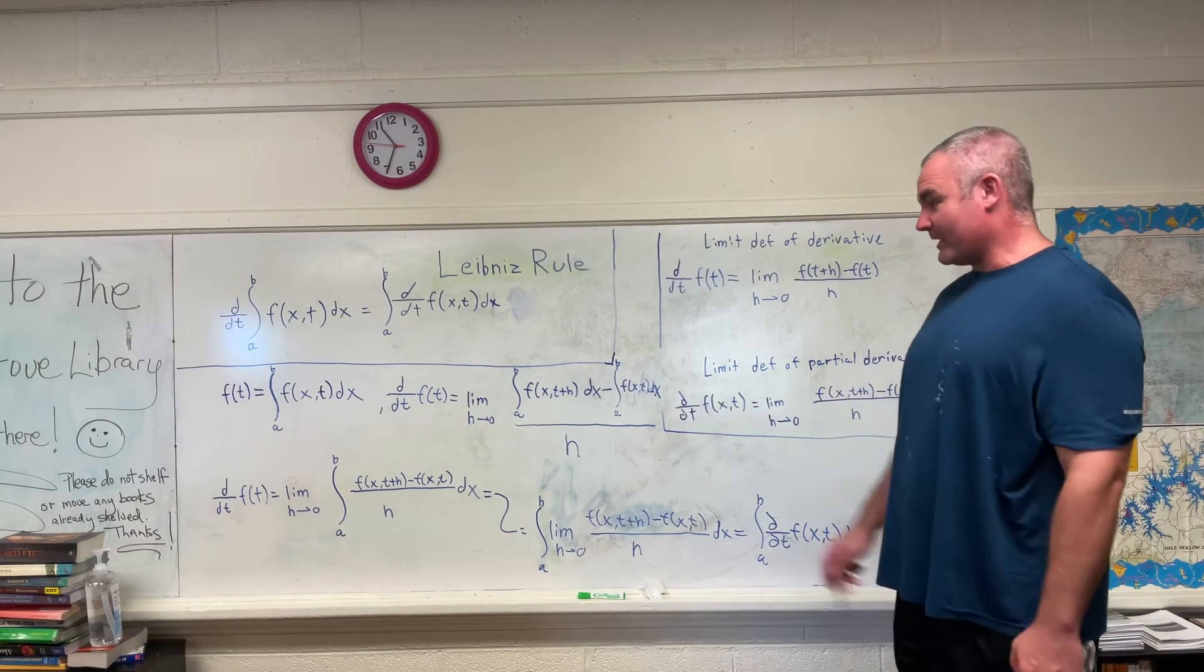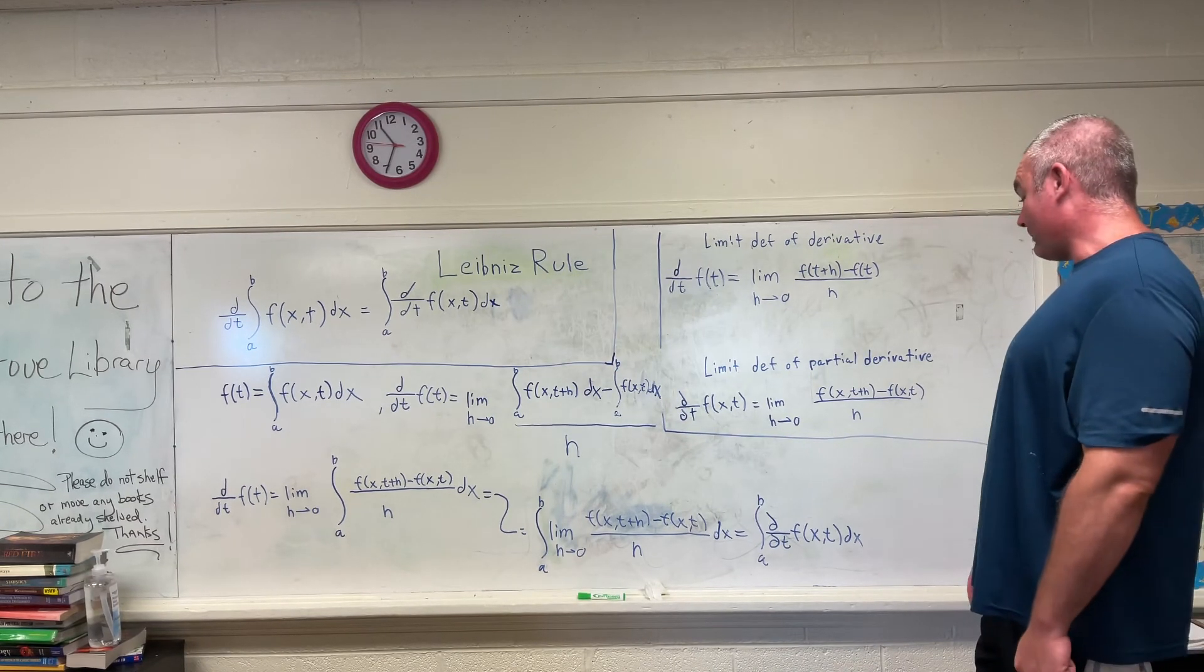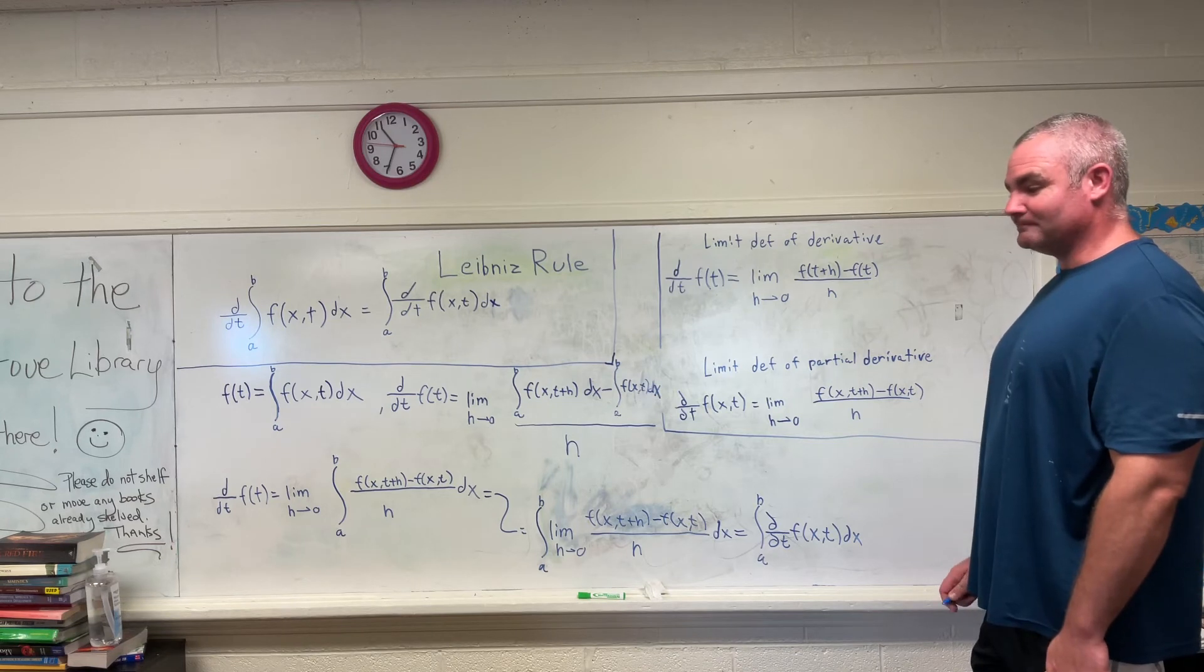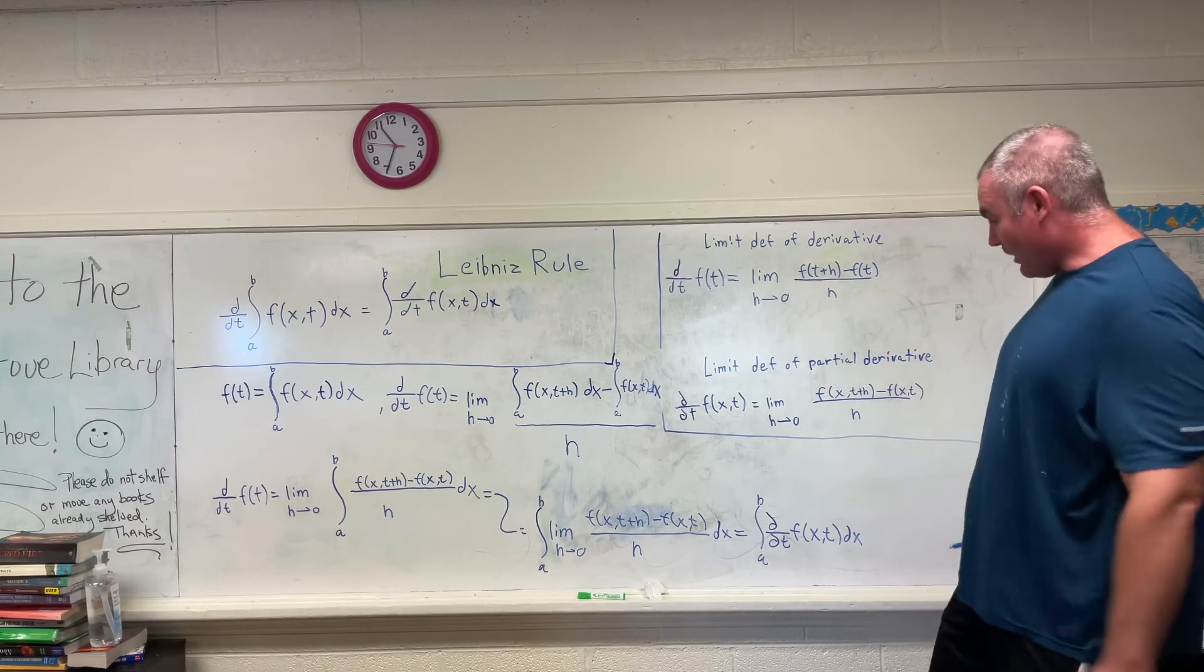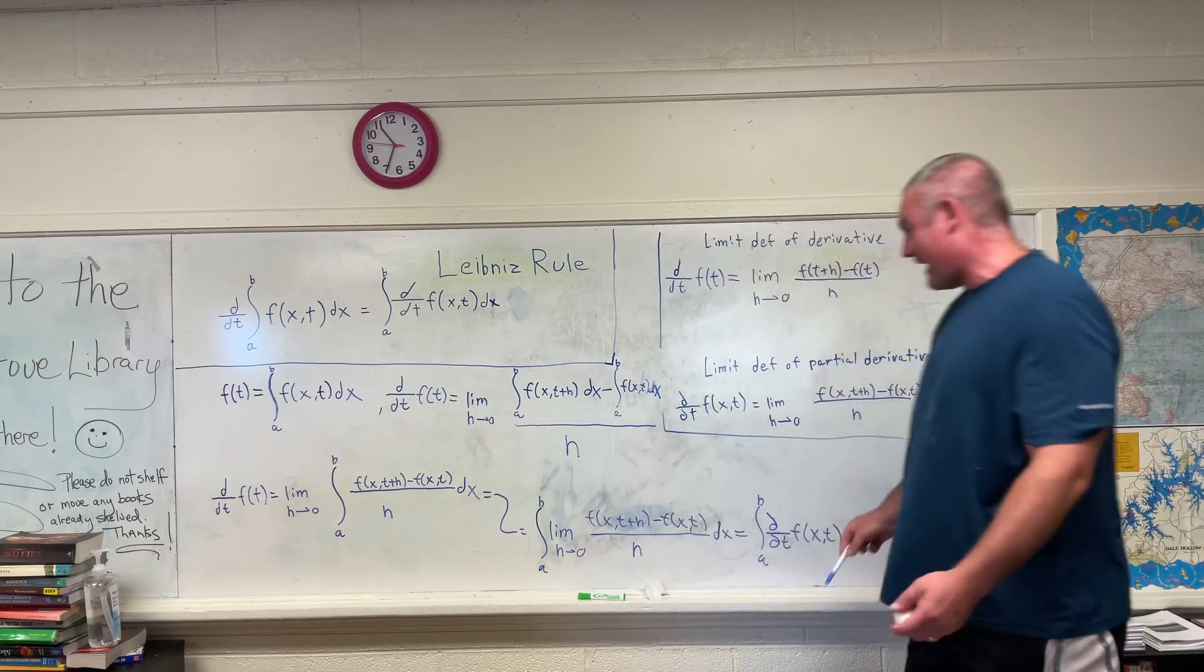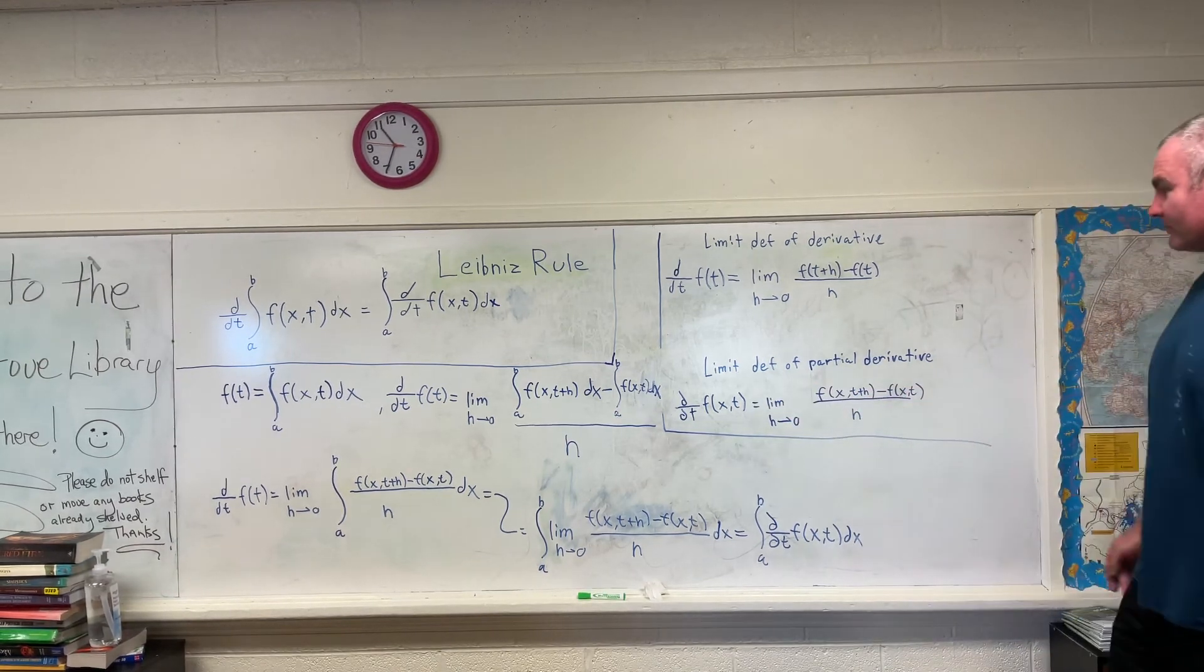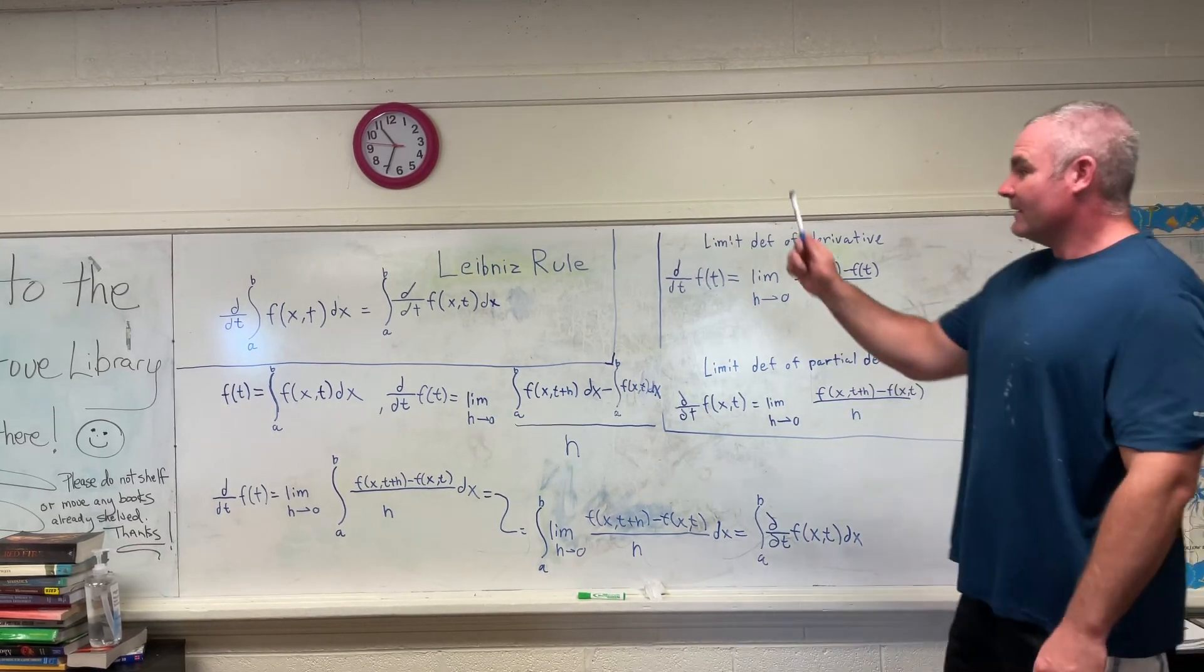I'm sorry some of you real mathematicians are probably pulling your hair out right now, and I apologize for that. Maybe this channel isn't for you. I do mathematics for fun. So I hope, oh sorry, one last step. So you can see here this is the limit as h approaches zero of f of x and t plus h minus f of x and t over h dx, which we define to be the partial derivative with respect to t right there.